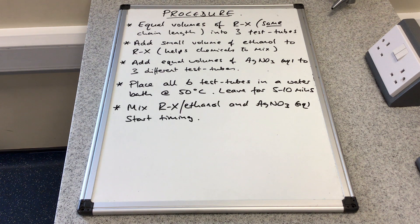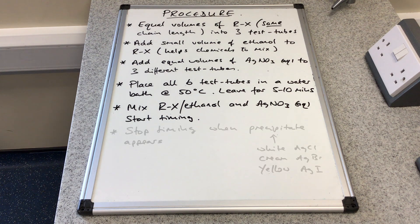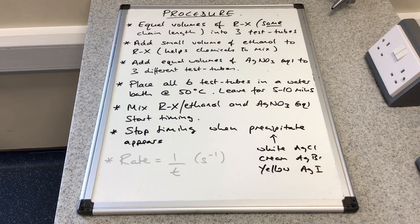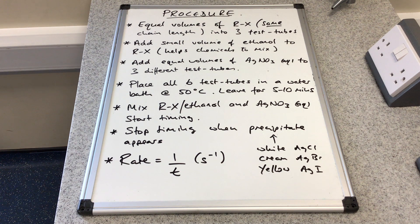Once they've had their required time in the water bath, you'd take one of your haloalkanes out and one of the silver nitrate test tubes, mix them together, and start timing. You'd stop timing when you see the precipitate appear. The white precipitate would indicate silver chloride from a chloroalkane, cream silver bromide from a bromoalkane, yellow silver iodide from an iodoalkane. Finally, the rate would be expressed as one over the time with units of seconds to the minus one.